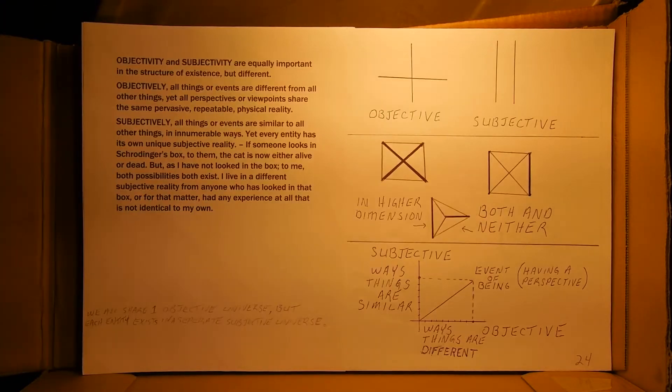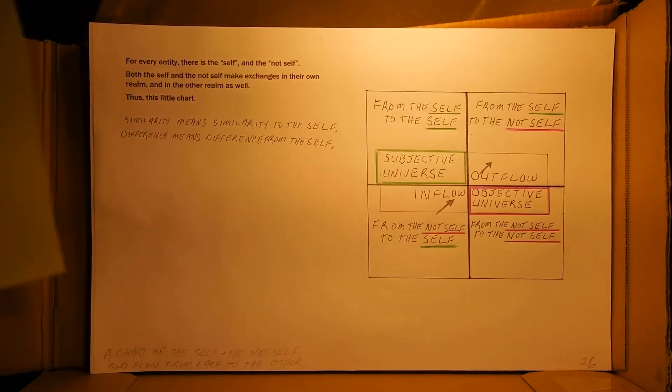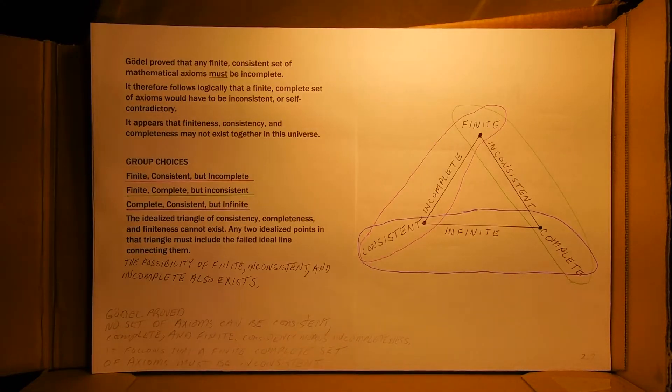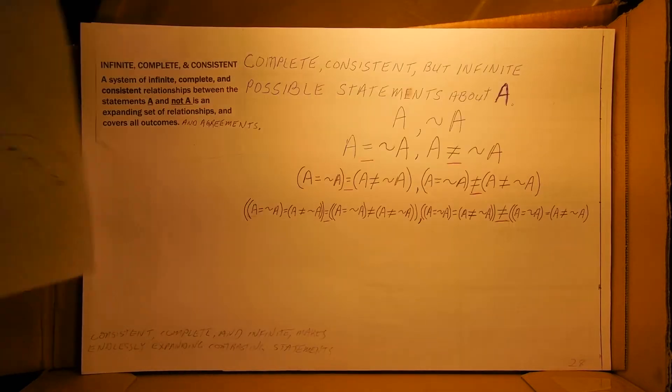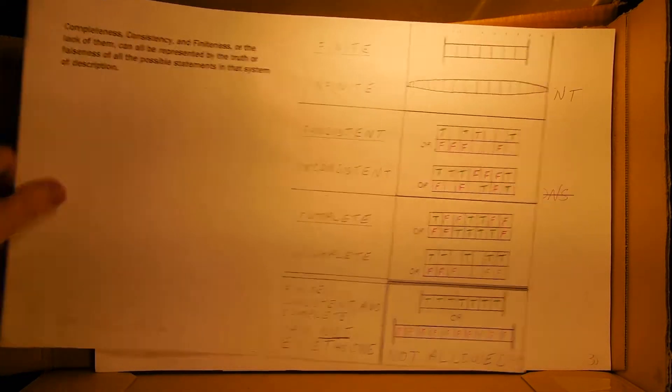This is all space and time with objectivity and subjectivity and the difference between those two types of reality. That's the end of that there. Now there is just a few pages on Godel, Completeness and Consistency and a slightly different take on that.